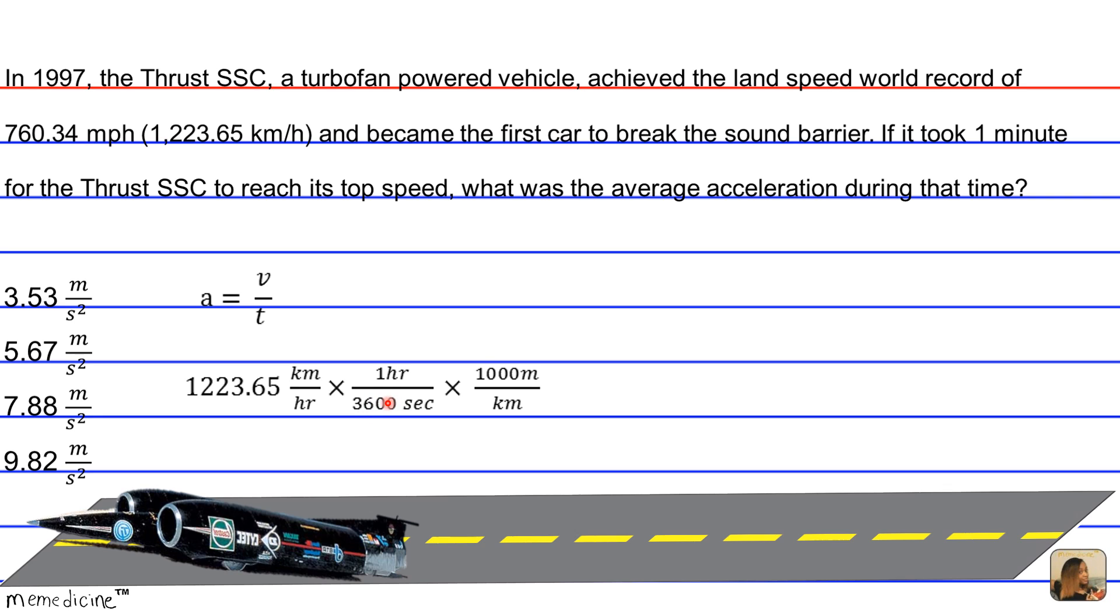And then we also want to convert our kilometers to meters, so we multiply by 1,000 meters per kilometer. After doing this, we get 339.9, or roughly 340 meters per second.